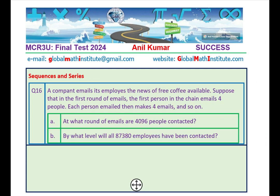Here is your next question in which we have sequences and series. A company emails its employees the news of free coffee available. Suppose that in the first round of emails, the first person in the chain emails four people. Each person emailed then emails four people and so on. Now we have the questions. At what round will 4096 people be contacted? And part B is by what level will all 87,380 employees have been contacted? Very important question on sequences and series. Write down the equation. Solve it.